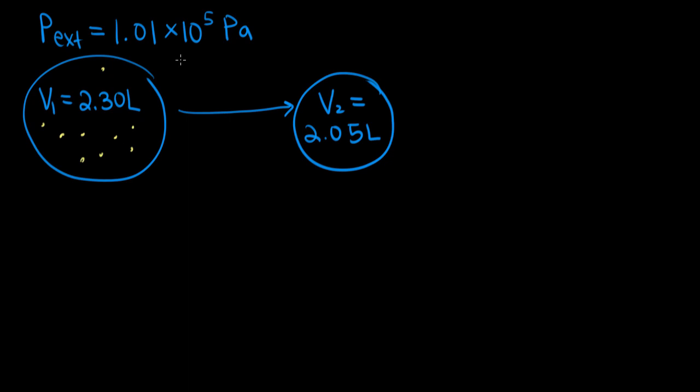Initially our gas has a volume of 2.3 liters. And then the gas transfers 485 joules of energy as heat to the surroundings. Once it does that, the final volume of our system is 2.05 liters. And we're assuming here that the moles of gas didn't change.